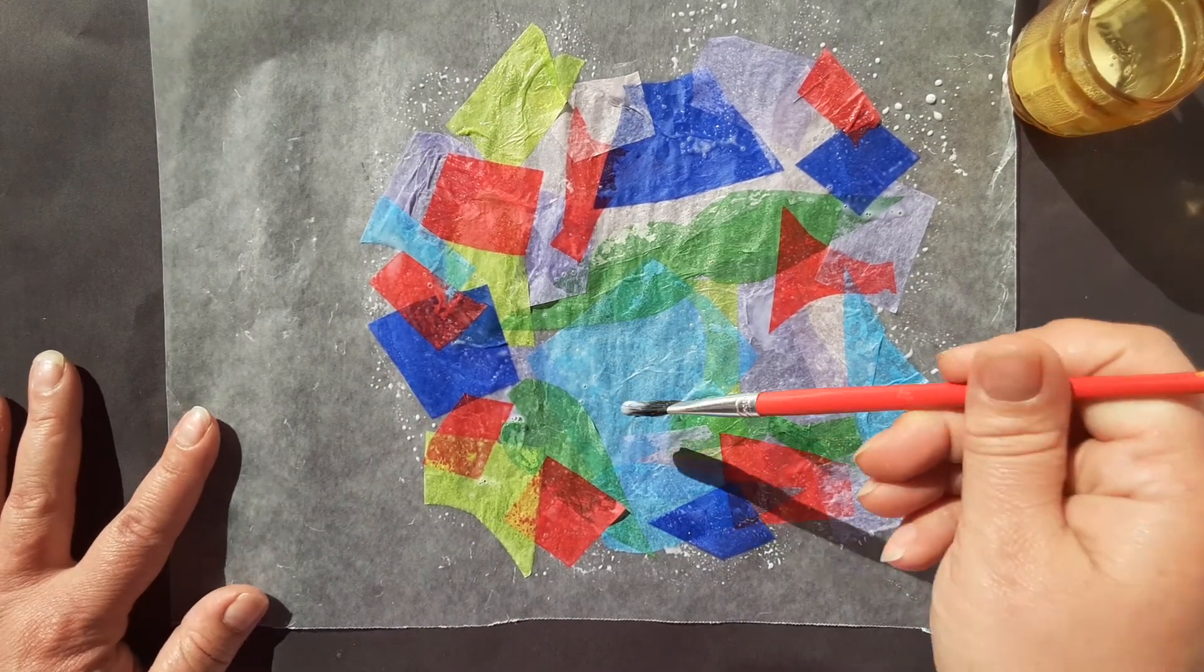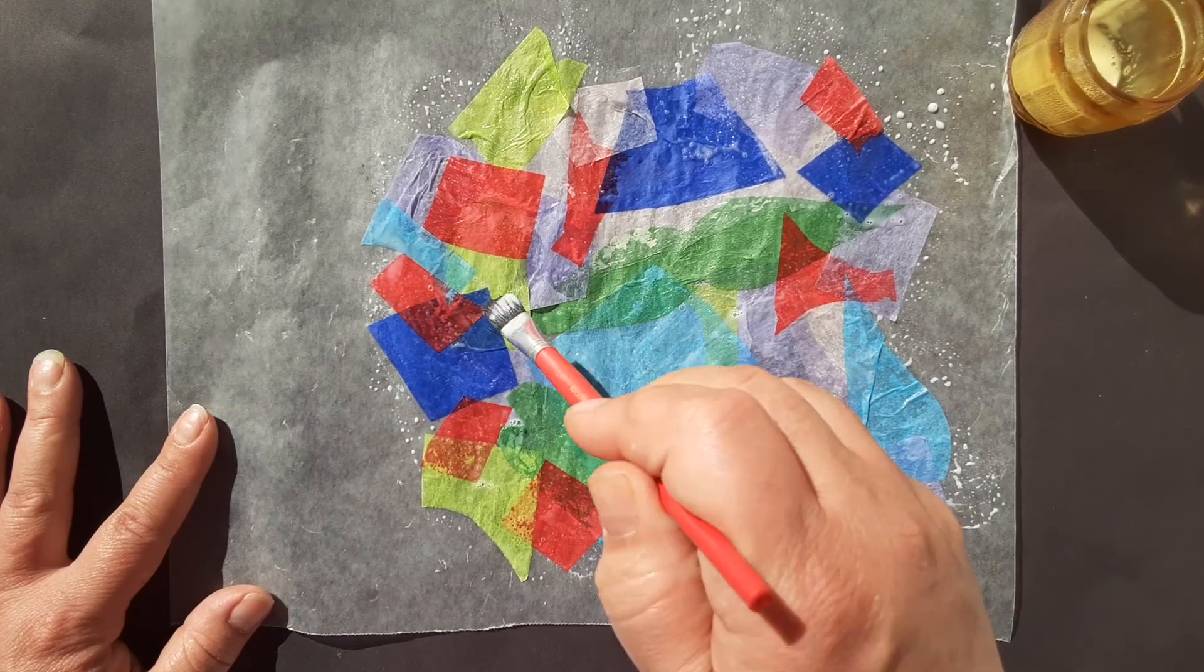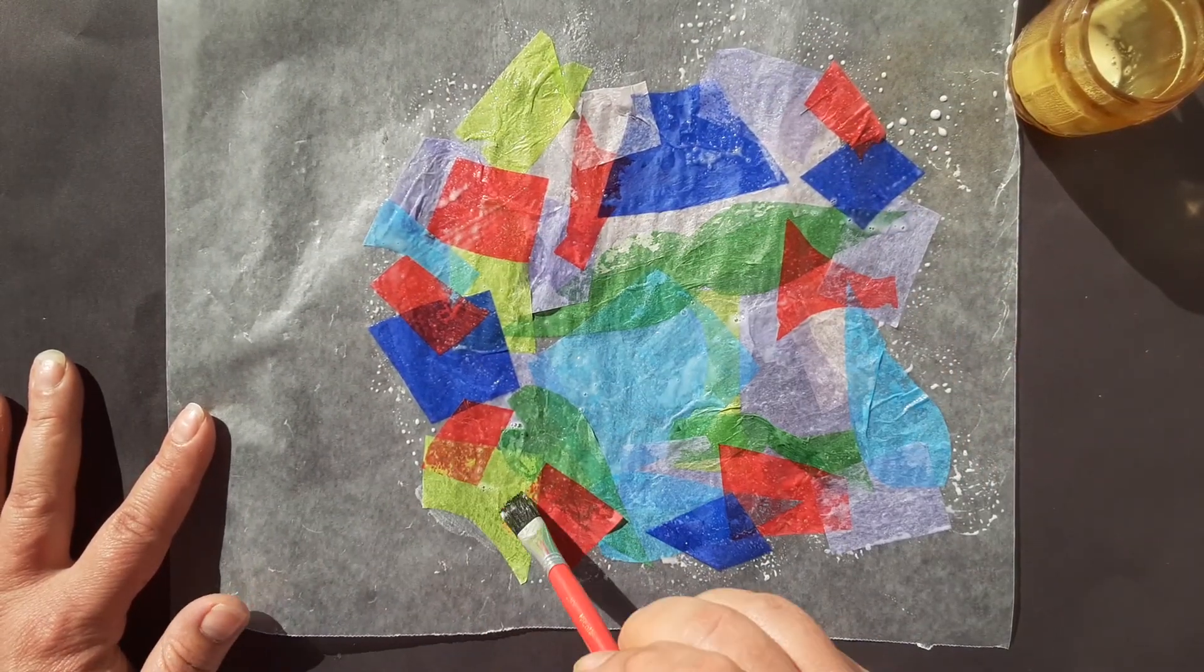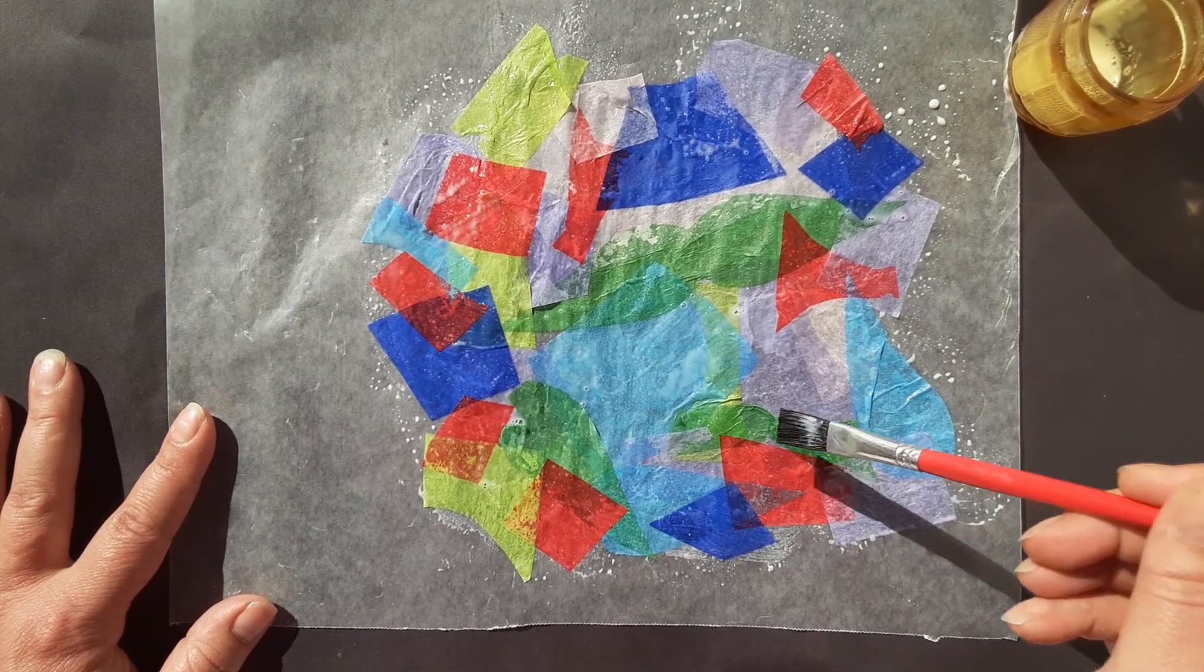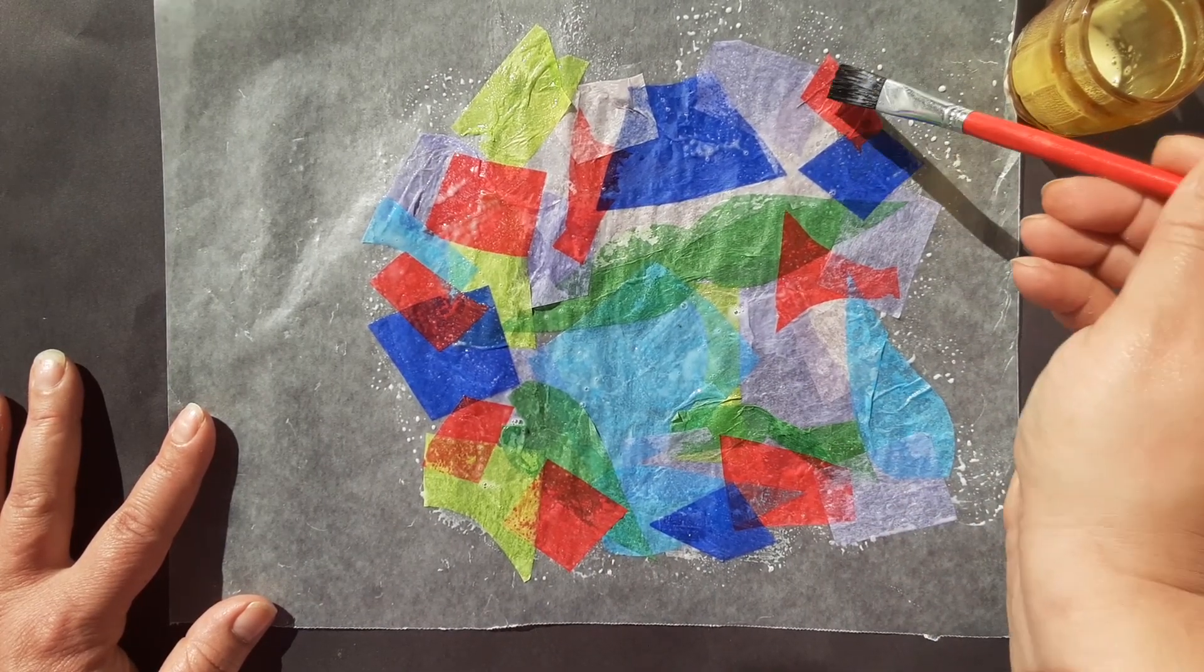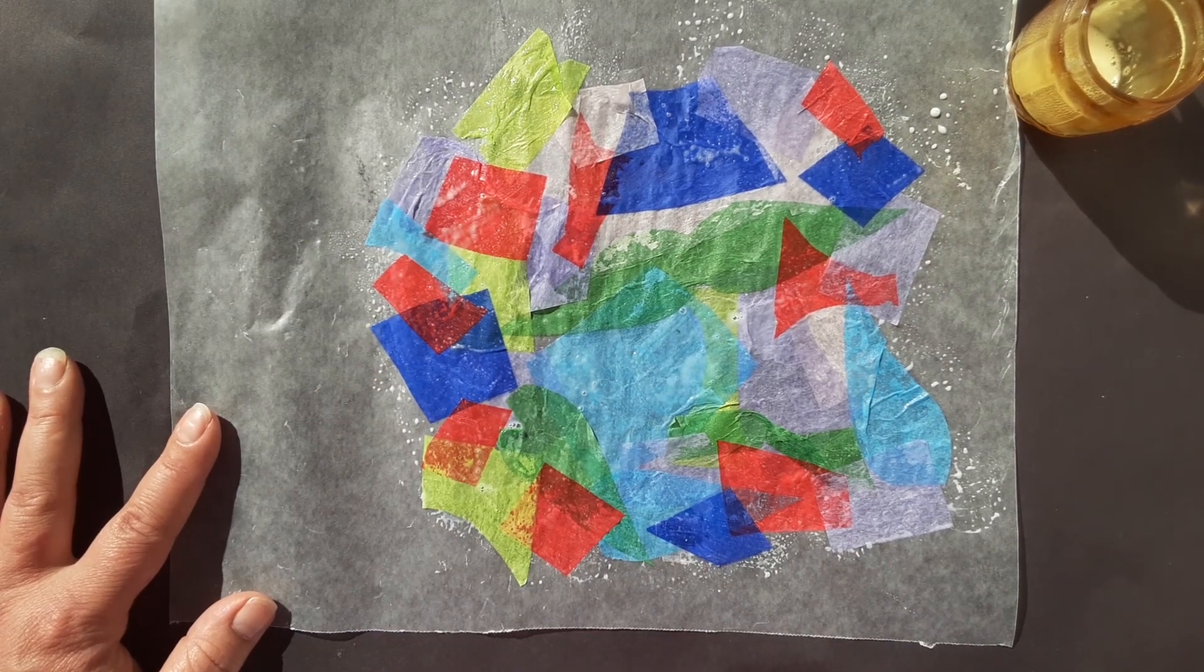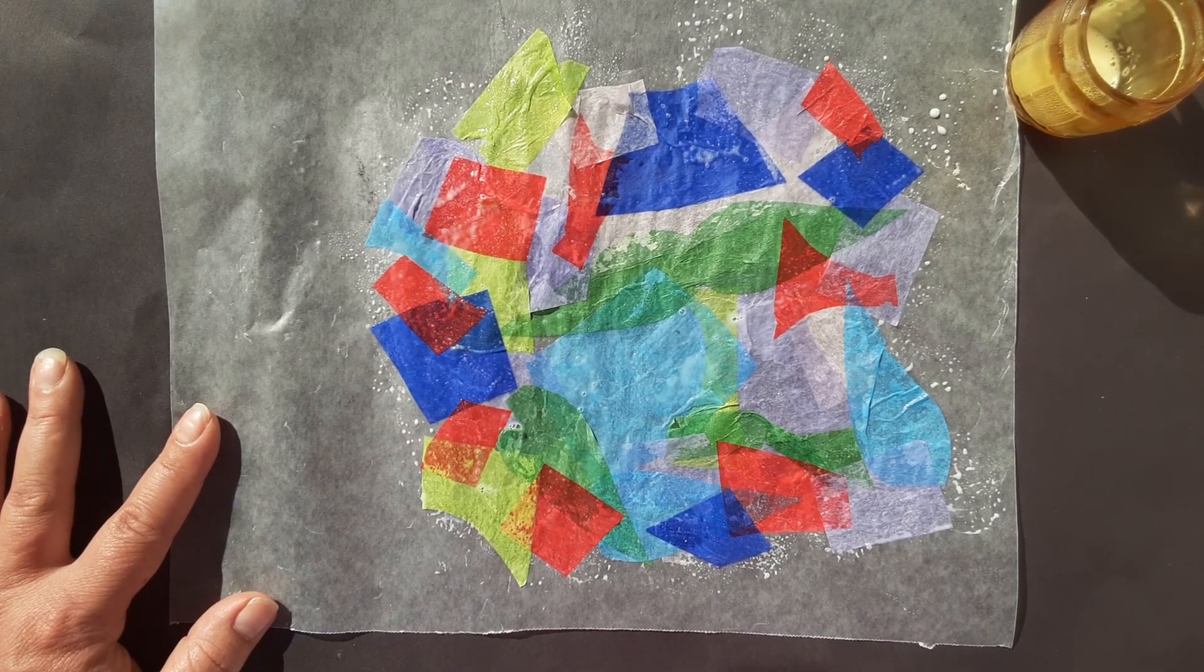Once you've decided that your artwork is complete and has all the colors and shapes you would like in it, go over it gently with glue to make sure all pieces are fully glued down. Once you know everything is set in place, give your artwork the chance to dry completely.